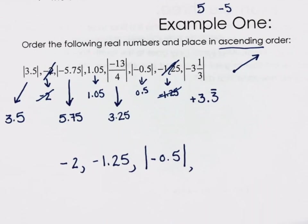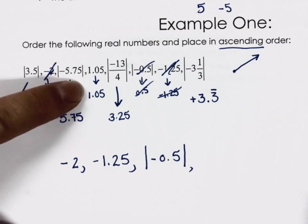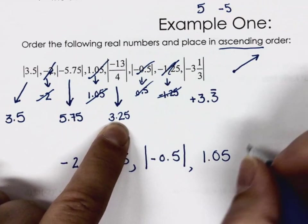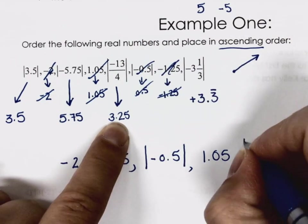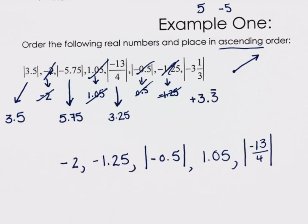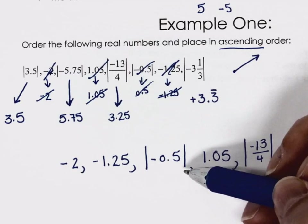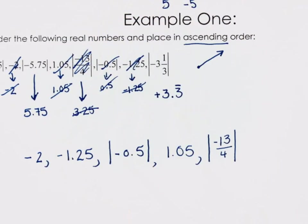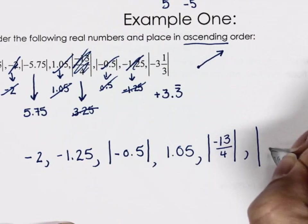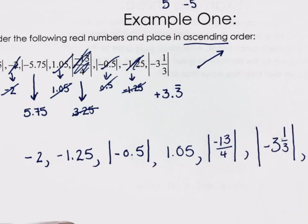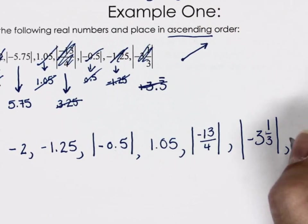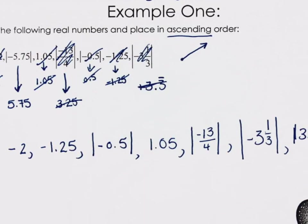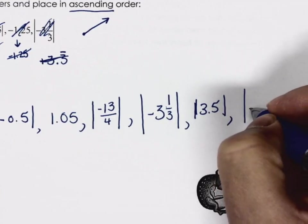Then 1.05 is next. Then 3.25, but I have to go back to the original format — absolute value brackets around negative thirteen over four. Make sure your absolute value brackets are significant; they should come above and below the number because sometimes they look like the number ones. Then we have negative three and one-third in absolute value brackets, and then 3.5 in absolute value brackets.